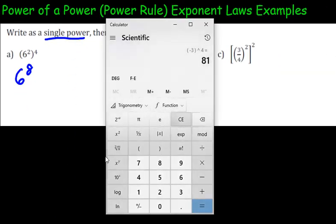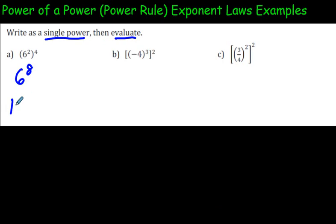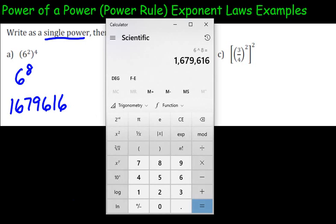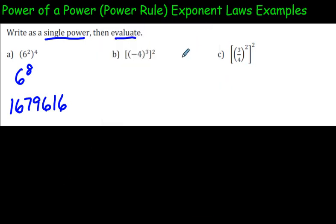But then to evaluate means we're going to have to go 6 exponent 8. Wow. What a big number. Let's see if I can memorize that. 1,679,616. So 1,679,616. Oh, wasn't that fun? Okay. Next one.